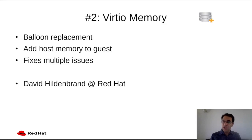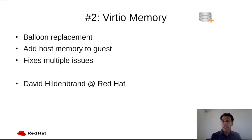The second largest change to the spec is documentation of the new Virtio memory device. This one can be seen as a replacement for the balloon device. While the balloon device takes guest memory and passes it on to the host, kind of stealing it from the guest, the Virtio memory device takes the opposite approach, adding host memory to the guest. This reversing of roles turns out to fix multiple issues in the traditional balloon device. Lots of thanks to David Hildenbrand at Red Hat, who implemented this device and included it in the specification.